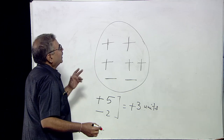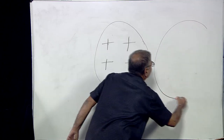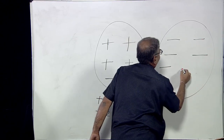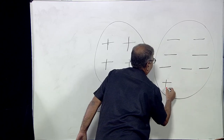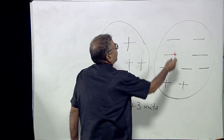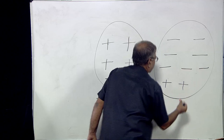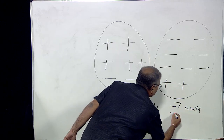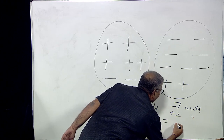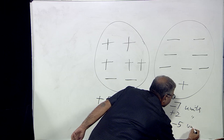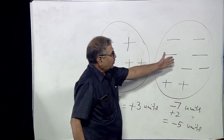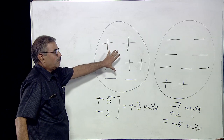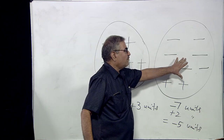Now we will draw the figure for a negatively charged body. This body has seven units of negative charge (−7) and the positive charge is +2 units. So the net charge is minus five units. A positively charged body has an excess of positive charge, and a negatively charged body has an excess of negative charge.